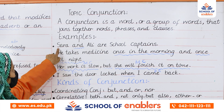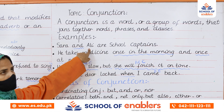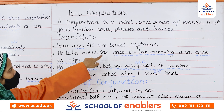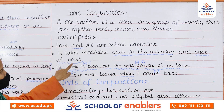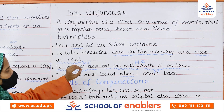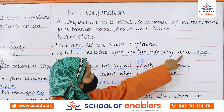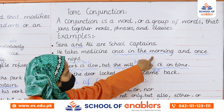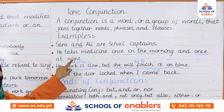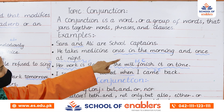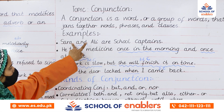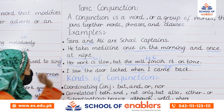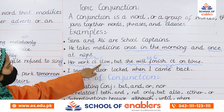In 'Sarah and Ali are school captains,' the word 'and' is connecting Sarah and Ali — two words, two nouns. In the next sentence, 'He takes medicine once in the morning and once at night,' the word 'and' is connecting two phrases: 'once in the morning' and 'once at night.' These are prepositional phrases.